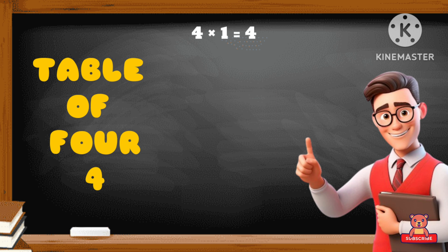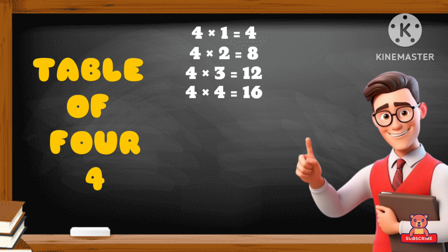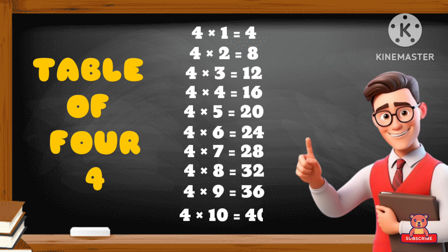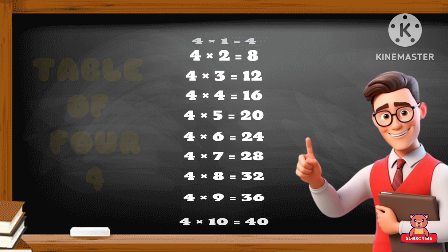Four one's a four, four two's a eight, four three's a twelve, four four's a sixteen, four five's a twenty, four six's a twenty-four, four seven's a twenty-eight, four eight's a thirty-two, four nine's a thirty-six, four ten's a forty.